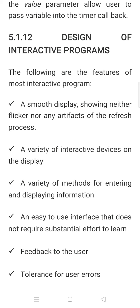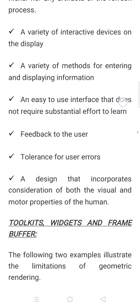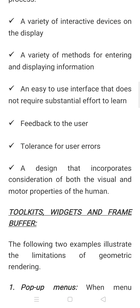The second point: mention a variety of interactive viewer devices on the display. Third, a variety of methods for entering and displaying information, like mouse, keyboard, menu and so on. Fourth, an easy-to-use interface that does not require substantial effort to learn — an easily understandable interface should be developed. Fifth, feedback to the user should be provided. Sixth, fault tolerance should be handled — tolerance for user errors. The design should incorporate consideration of both visual and motor properties of the human.